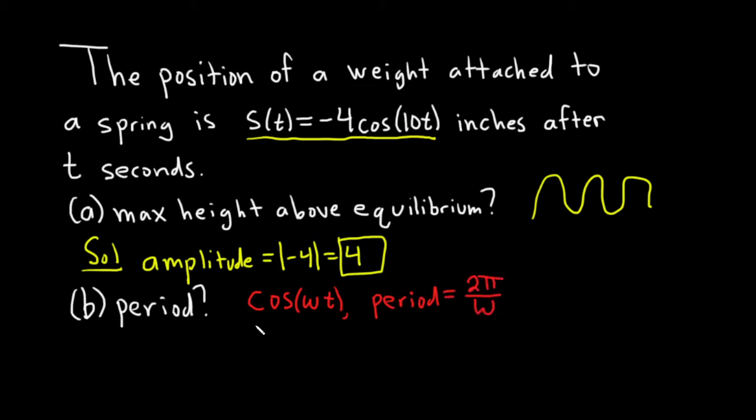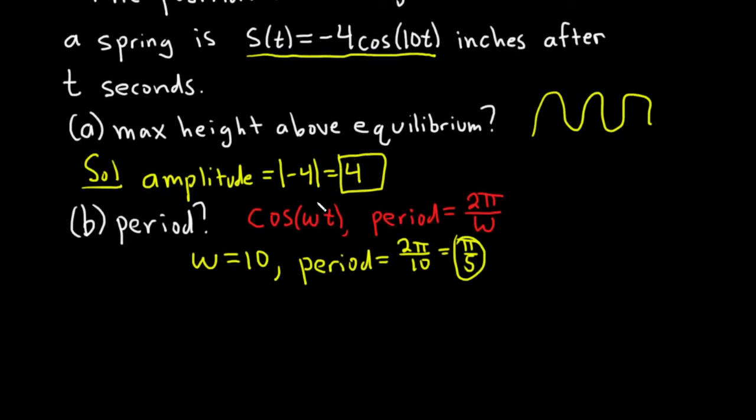So in our example here, omega is equal to 10. And so the period in this particular example is going to be 2 pi over 10, which is just pi over 5. So that would be the period.